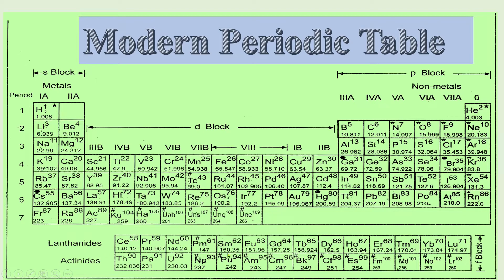And at the bottom, there are two rows. One is called lanthanides and another row is called actinides. Both of them represents F block element.